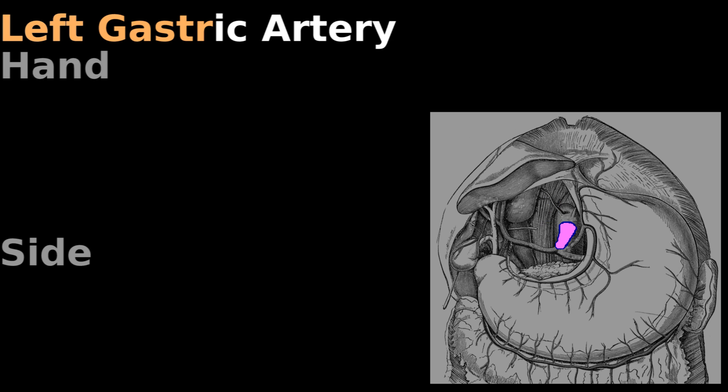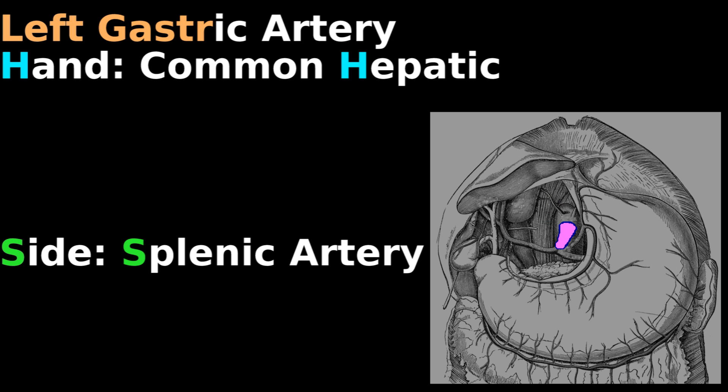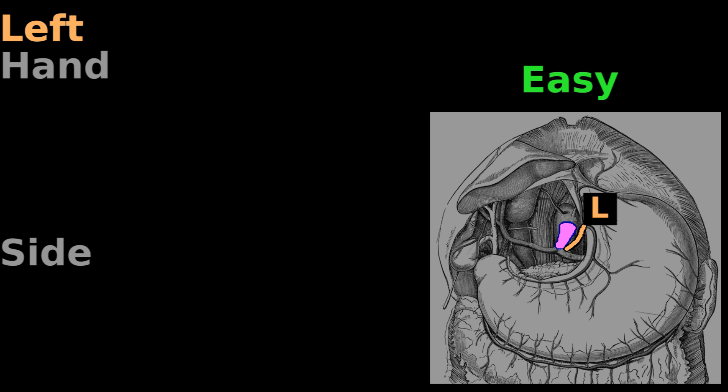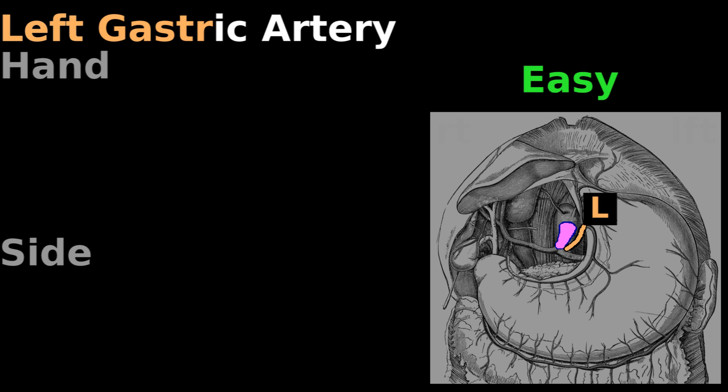Directly off the celiac trunk is left hand side. Left is easy — it's the left gastric artery.